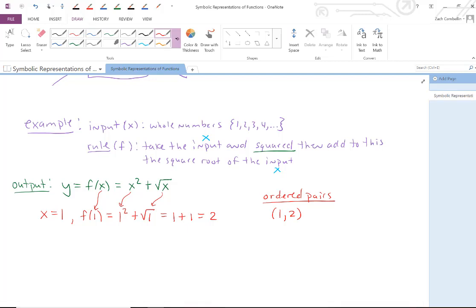We can evaluate another one. Maybe, what if x is 4? Then I'm gonna evaluate the output of the input of 4, applying the function rule of f. What do I do? I take the 4, I square it, I add to it the square root of 4. 4 squared is 16, and square root of 4 is 2. The result is 16 plus 2, which is 18. We get the ordered pair (4, 18).